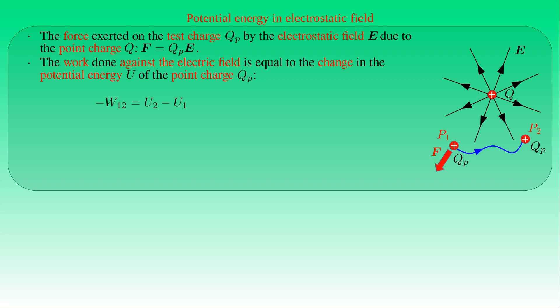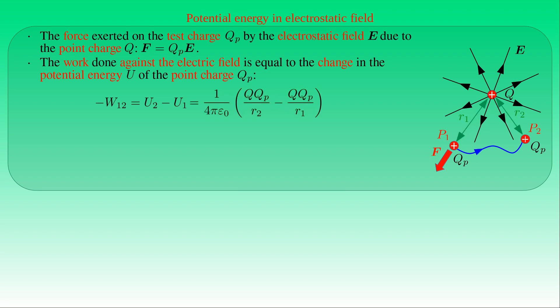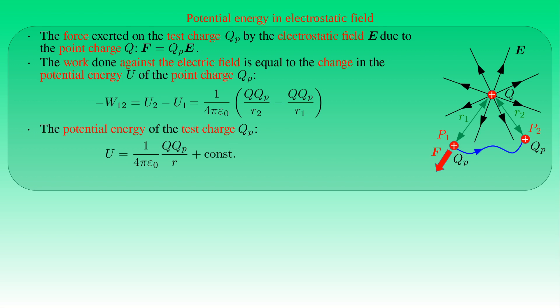The potential energy U of test charge QP at a given point in the electrostatic field due to Q equals (1/4πε₀) times Q·QP divided by the distance R between the charges. We determine the integration constant from the assumption that potential energy vanishes when QP is brought infinitely far from Q, which forces the constant to vanish. Therefore, U = (1/4πε₀) × Q·QP/R.